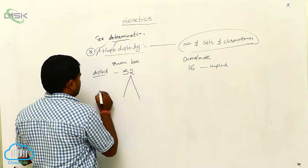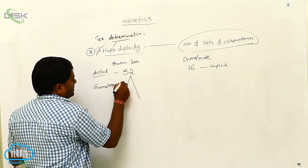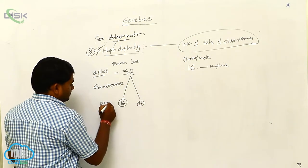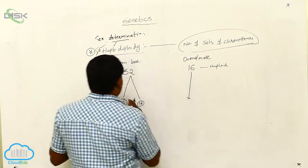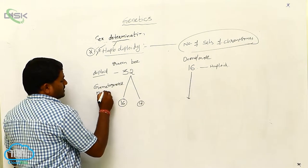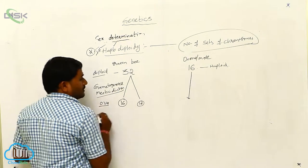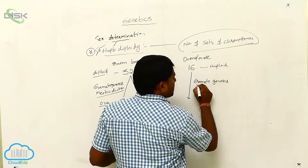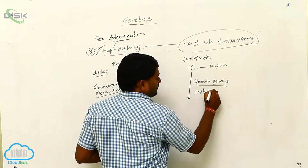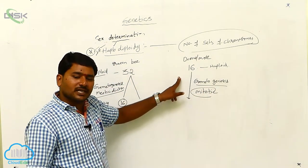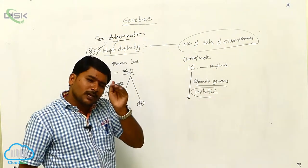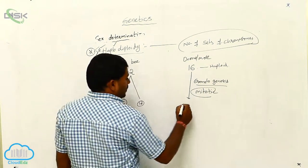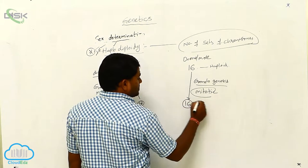During gametogenesis, the queen bee undergoes meiotic division, producing ova with 16 chromosomes. In the drone or male, gametogenesis occurs by mitotic division — because if meiotic division occurred in a haploid with 16 chromosomes, the number would be reduced to 8. That is why in male honeybees, mitotic division takes place during gametogenesis, maintaining 16 chromosomes in the sperm.